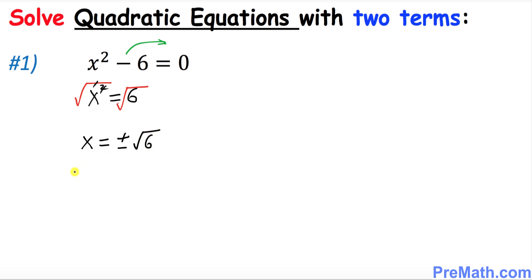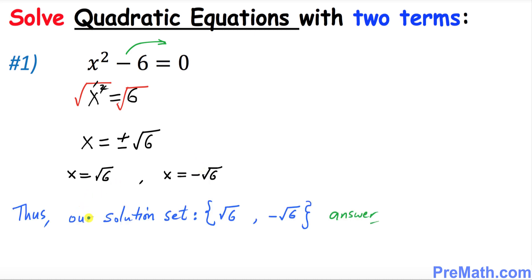We can write this as x equal to positive square root of 6, and the other solution is x equal to negative square root of 6 — two solutions. So our solution set is x equal to square root of 6 and x equal to negative square root of 6. And that is our answer.